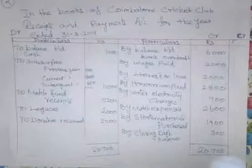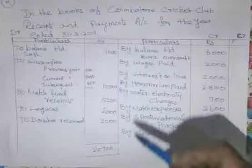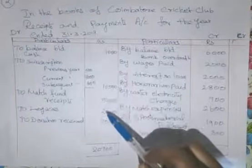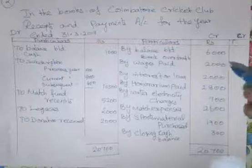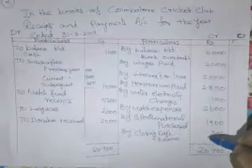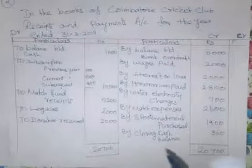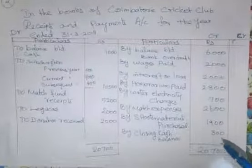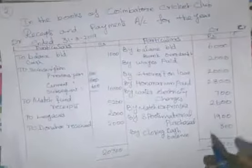Total balance: debit side Rs. 20,700; credit side total payment Rs. 18,300. Closing cash balance — cash balance already given. The balancing figure is bank balance Rs. 2,400.